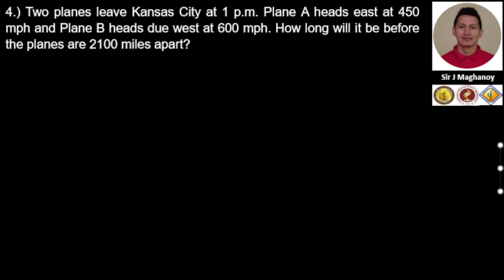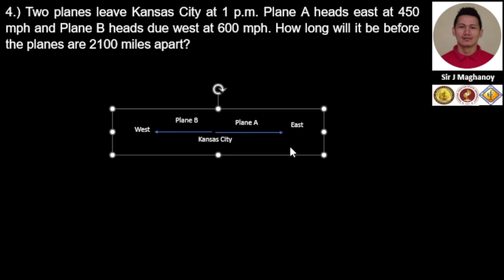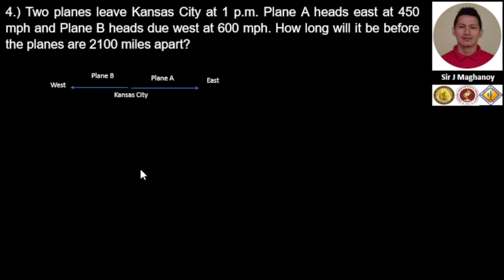We visualize the movement of our two airplanes. Both planes came from the same location — the same airport at Kansas City. Plane A moves east at a speed of 450 miles per hour, and Plane B heads due west at 600 miles per hour, so Plane B is moving faster. We need to find how long before the planes are 2100 miles apart — the total distance from west to east.